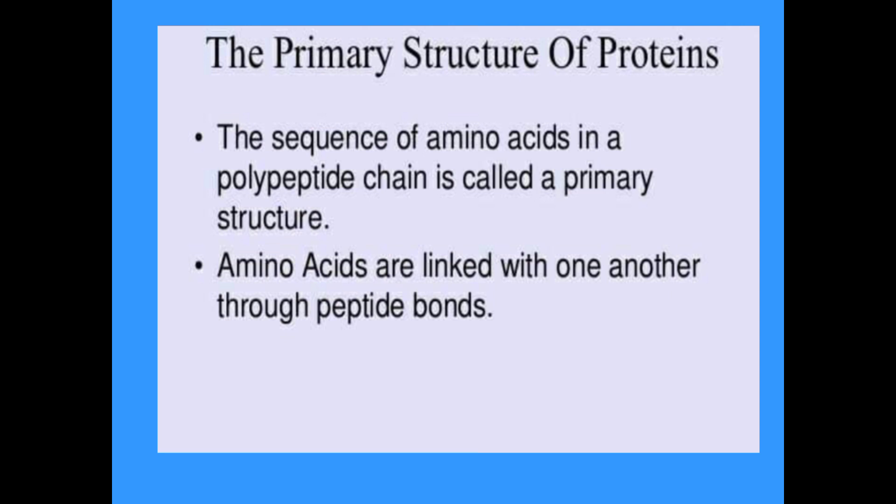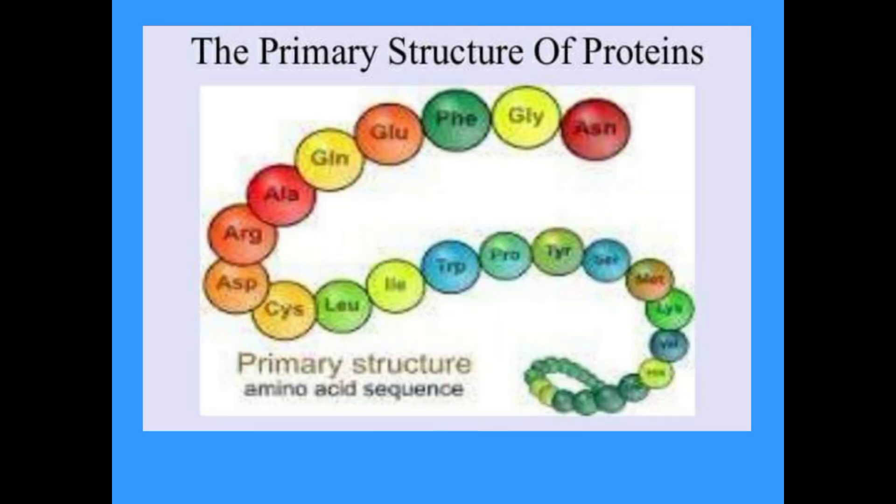F. Sanger was the first scientist who determined the sequence of amino acids in a protein molecule. After ten years of work he concluded that insulin is composed of 51 amino acids in two chains: one chain had 21 amino acids and the other had 30, held together by disulfide bridges. Hemoglobin is composed of four chains — two alpha and two beta chains; each alpha chain contains 141 amino acids while each beta chain contains 146 amino acids. The size of a protein molecule is determined by the type and number of amino acids comprising that particular protein.